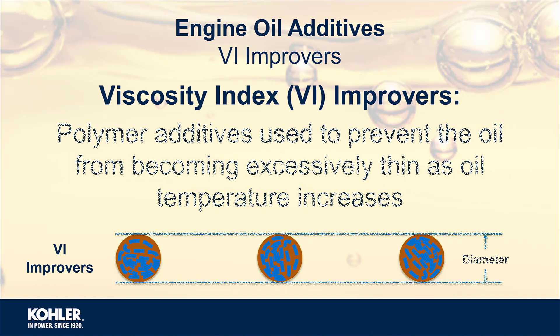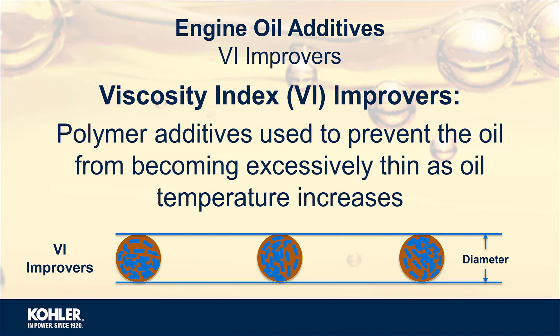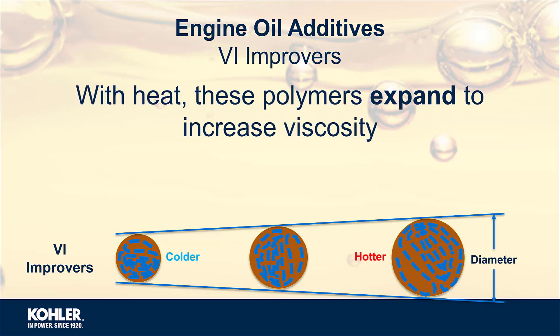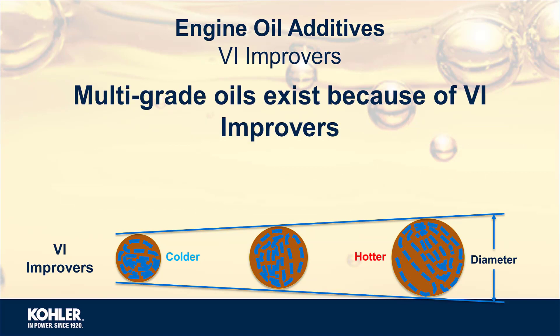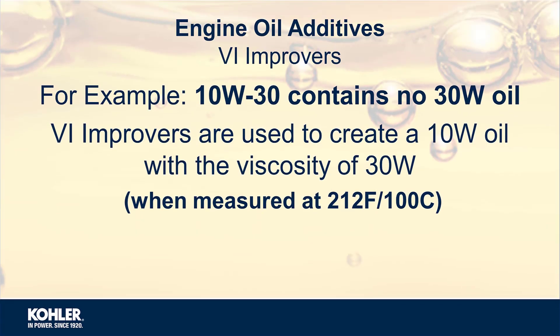Viscosity index improvers are polymer additives used to prevent the oil from becoming excessively thin as oil temperature increases. When heated, these polymers expand to increase viscosity. Multigrade oils exist because of VI improvers. For example, 10W-30 contains no 30-weight oil; VI improvers are used to create a 10-weight oil with a viscosity of 30-weight when measured at 212 degrees.